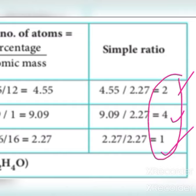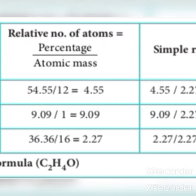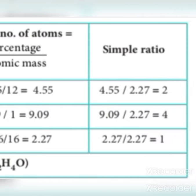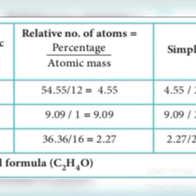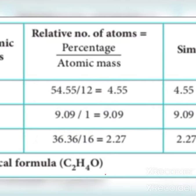The simplest whole number ratio is carbon 2, hydrogen 4, oxygen 1. Therefore the empirical formula of this compound is C₂H₄O.